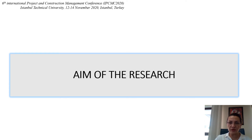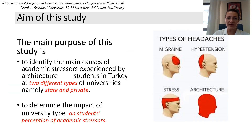The aim of this research is to identify the main causes of academic stressors experienced by architecture students in Turkey, at two different types of universities, namely state and private. Another purpose of the study is to determine the impact of university type on students' perception of academic stressors.